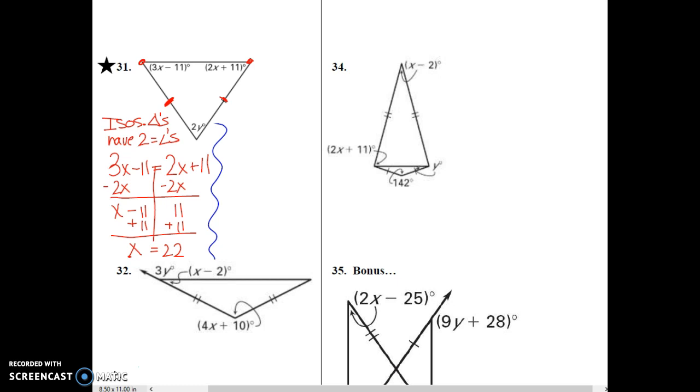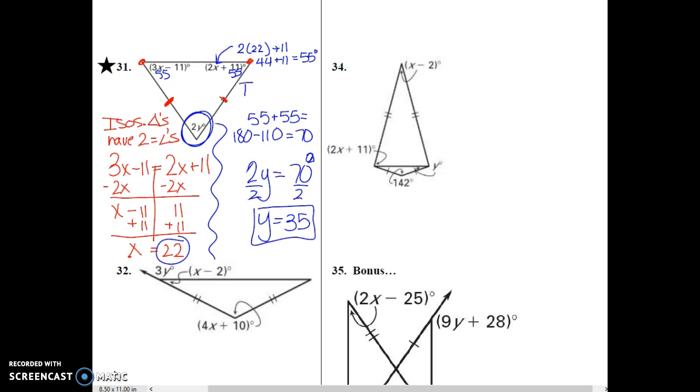And then we need to move on and find the y part. In order to do the y part, we're going to take this 22 right here and we're going to plug it back into the problem. 2 times 22 plus 11 is 44 plus 11, 55 degrees. So we have 55 in both of these corners. That means 55 plus 55 is equal to 110 degrees. We take that and subtract from 180 and we get 70. So we know that the third angle, 2y, must equal 70 degrees. So divided by 2 we have y equals 35. And the reason that we know that is that there are 180 degrees in a triangle. Plugging our number back in, we'll find that.